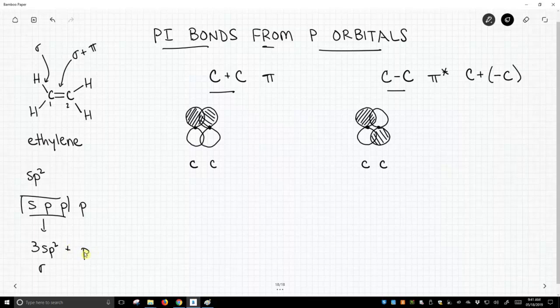Plus there's this leftover p. And the leftover p orbitals, one on carbon 1, one on carbon 2, is how we're going to make our pi bonds. So as with any mixing of orbitals, we have two orbitals, we're going to mix them two ways. We're going to add them and subtract them.